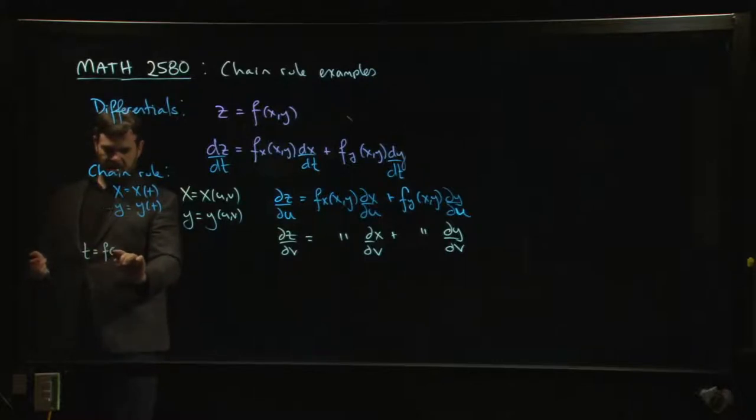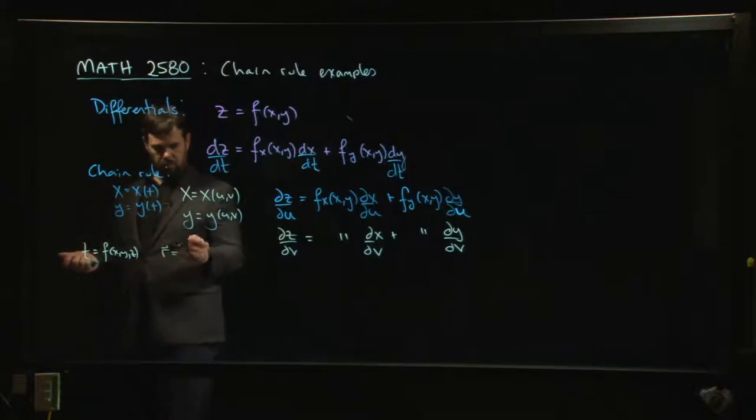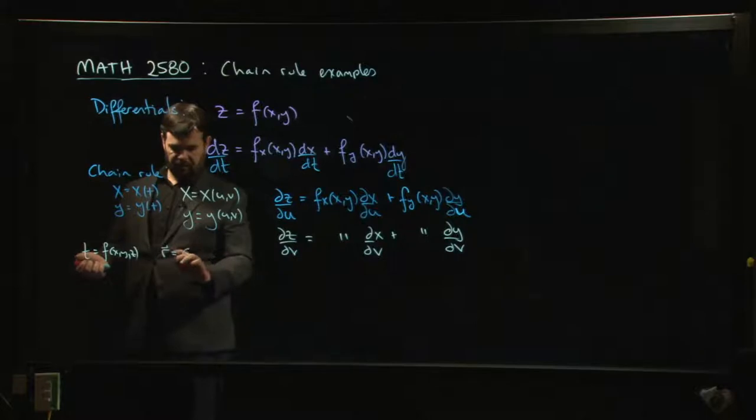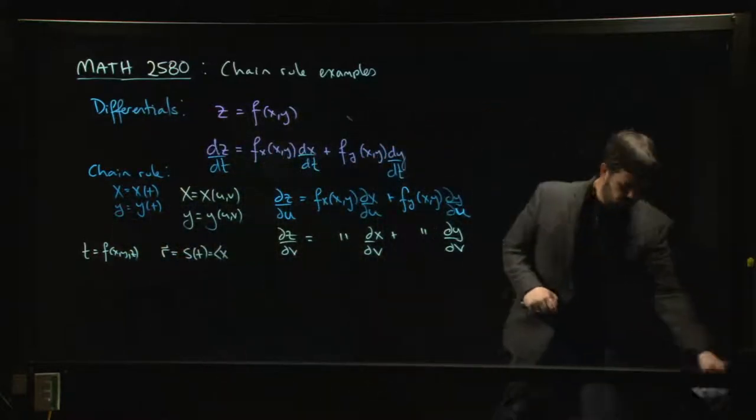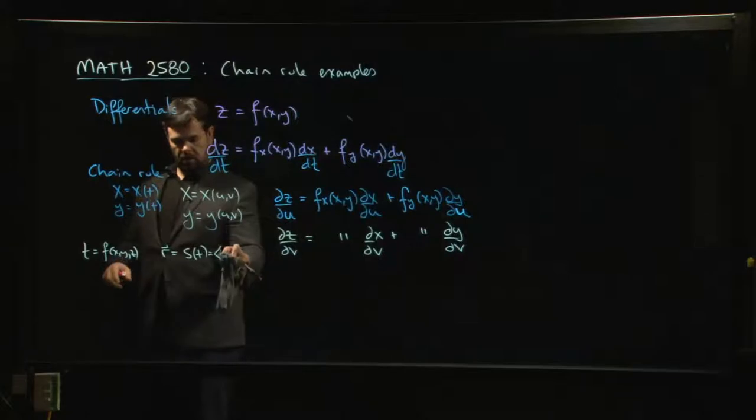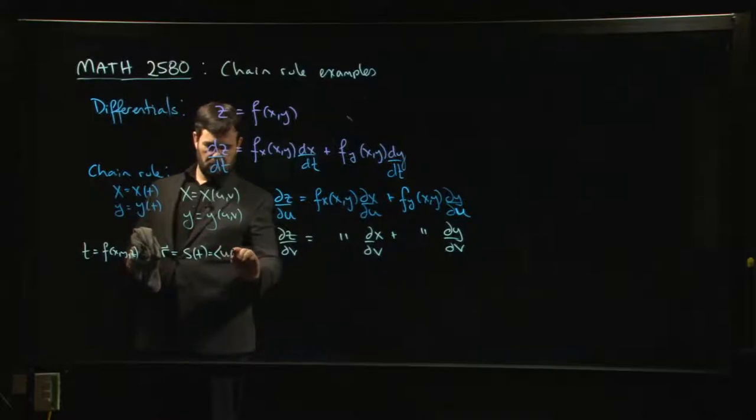I'm thinking of maybe something like this. We can do something where maybe t is f of x,y,z. And I have maybe r equals s of t. This is going to be, s is going to be like u of t, v of t. One of the troubles with calc four is that sometimes you run out of letters.